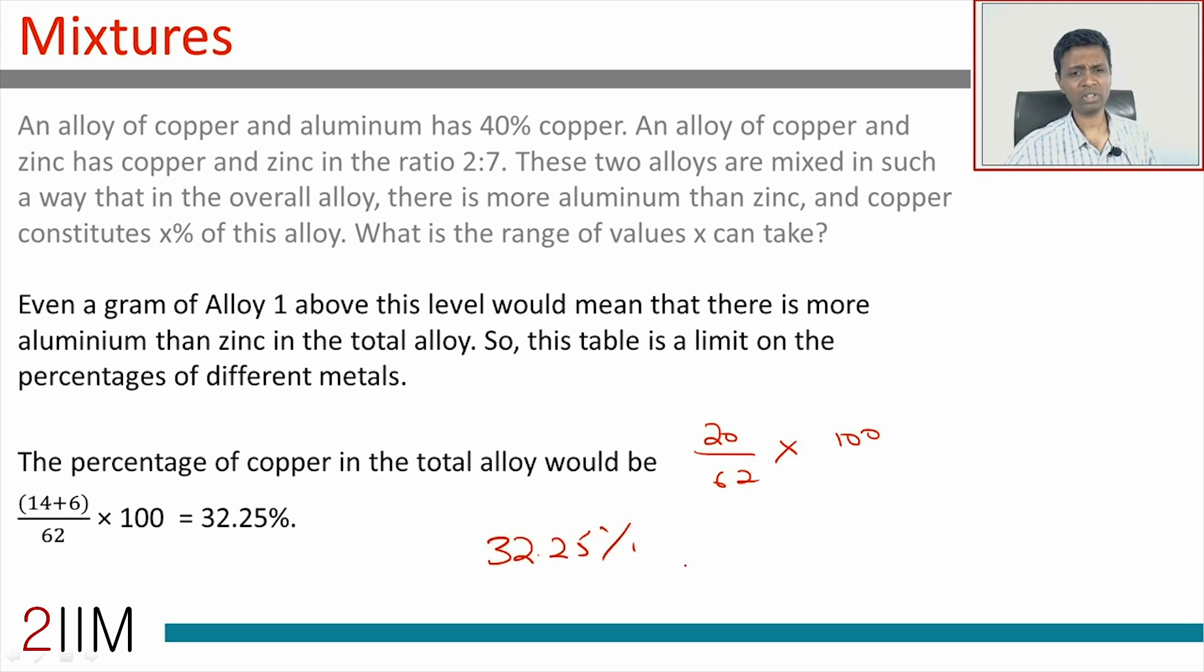What is the maximum amount of copper? We have more aluminum than zinc when the first alloy is more in order to offset the zinc. The extreme scenario where aluminum can be more than zinc is when we have nothing of the second alloy, we have everything of the first alloy. We have tons and tons of the first alloy and maybe half a gram of the second alloy, practically only the first alloy. That means the maximum amount of copper, the highest percentage of copper that can be there is 40 percent.